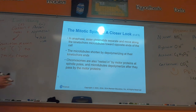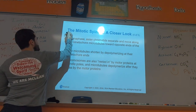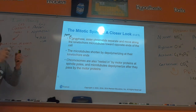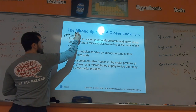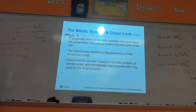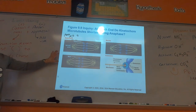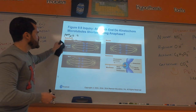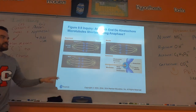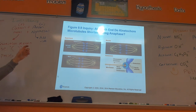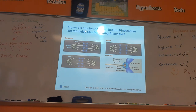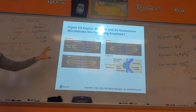In anaphase — A for away — we separate the sister chromatids. A question that arises is: whenever we're separating those sister chromatids, which end do the kinetochore microtubules shorten from? When we're pulling apart the sister chromatids, there are a few different things going on.